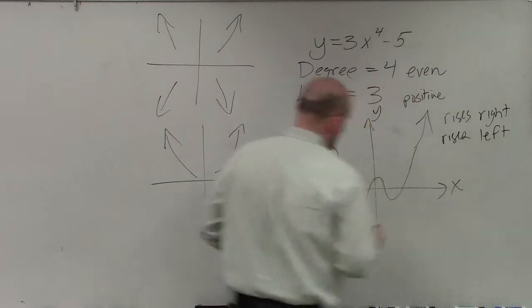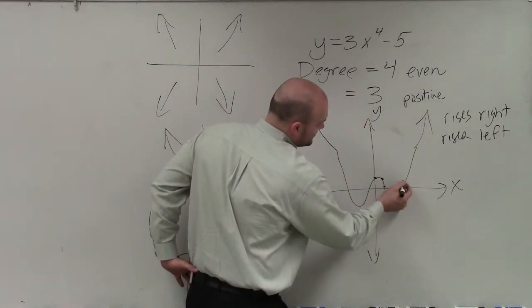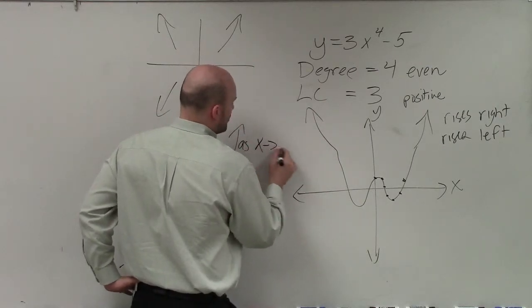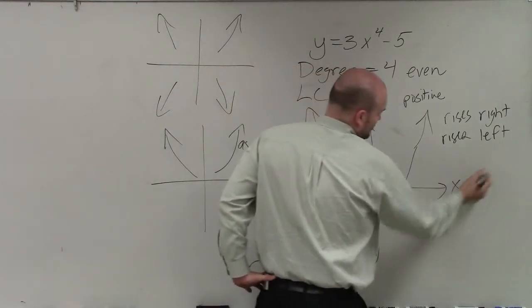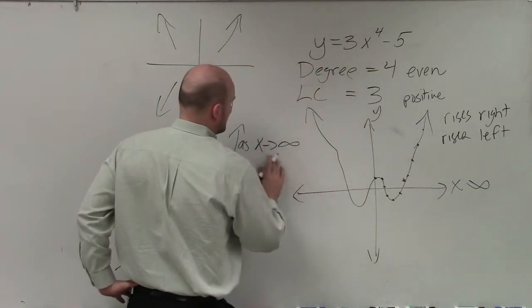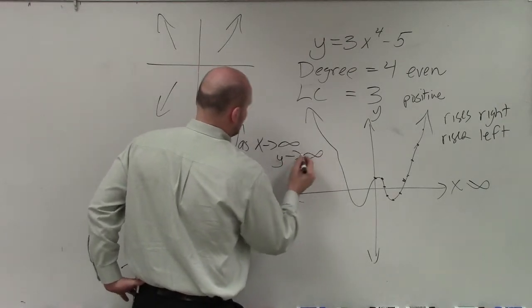Here's the y-axis, here's the x-axis. As my points on my graph, my x values go to the right, so as x approaches infinity, my y values of each of these coordinates also go to infinity.